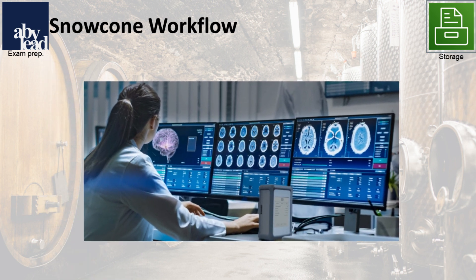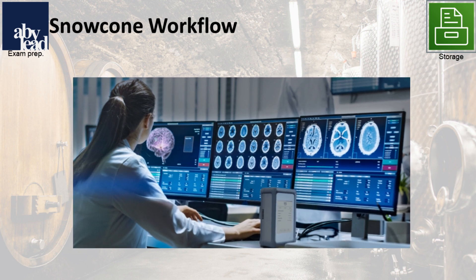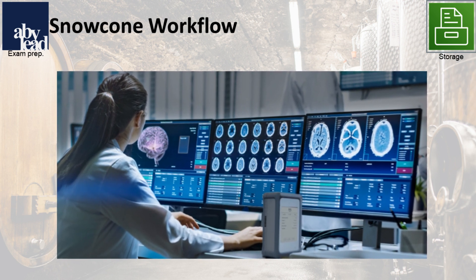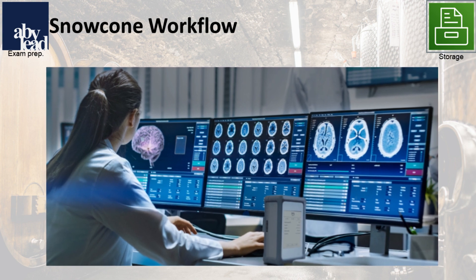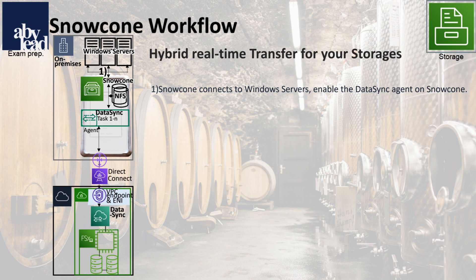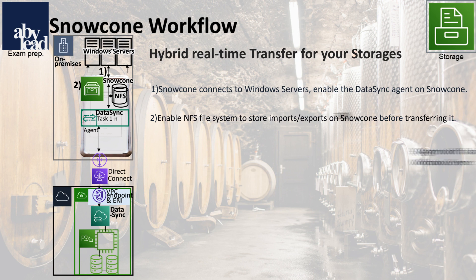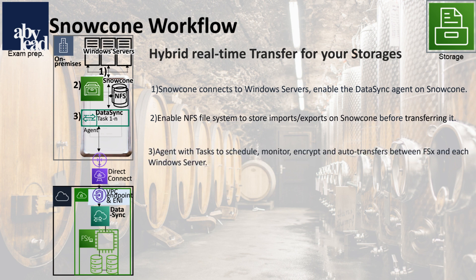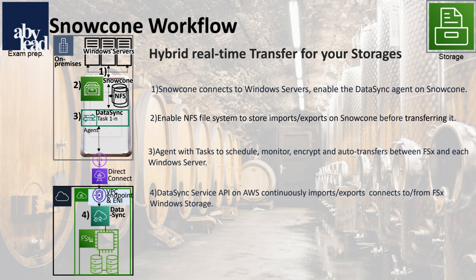From your app's servers, sensors, or machines, you can transfer via the small Snowcone device and its edge location to S3, EFS, or FSx Windows. If you are looking for hybrid storage transfers from your Windows servers in real-time, you connect to Snowcone. You also enable the NFS file system to store imports and exports on Snowcone before the transfer. Then you use the DataSync Agent task for auto-transfers between FSx and each Windows server. As a result, your connected DataSync API continuously imports and exports from FSx Windows storage.